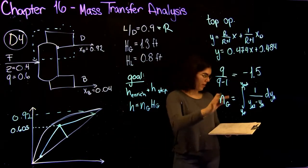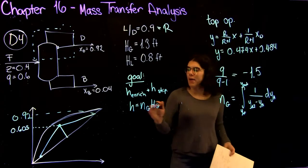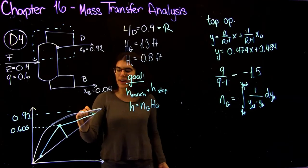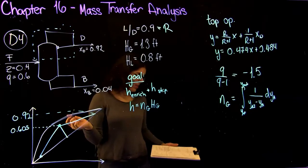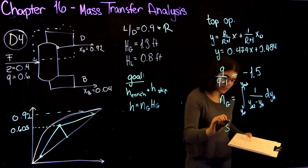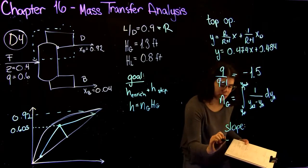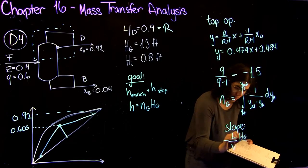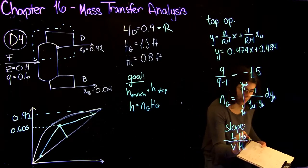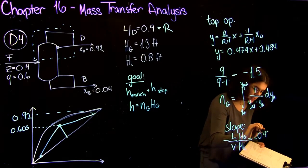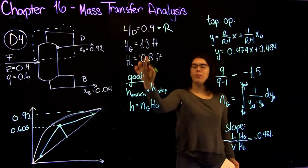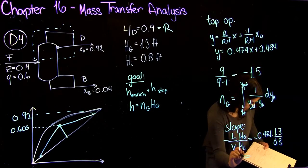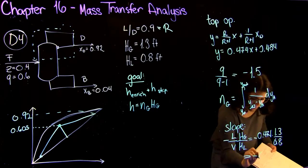Now we have our bounds of integration. Now we need to plot our mass transfer line. These lines are going to extend out from your operating line and they're going to hit your equilibrium line at different points. The slope of these lines is going to be equal to negative L over V times Hg over HL. If we plug everything in, you get negative 0.474 times 1.3 over 0.8, and you're going to get a slope equal to negative 0.77.